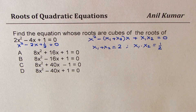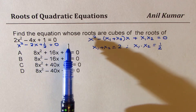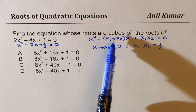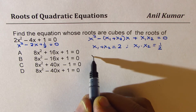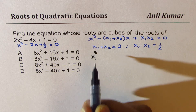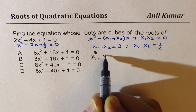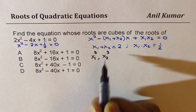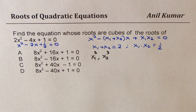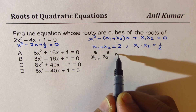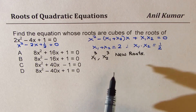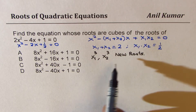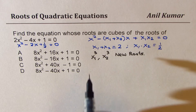Now, what do we need? We need to find the equation whose roots are cubes of these roots — that is, x1 cubed as one root and x2 cubed as the other root. These are the new roots. To get the equation, let us find their product and sum.